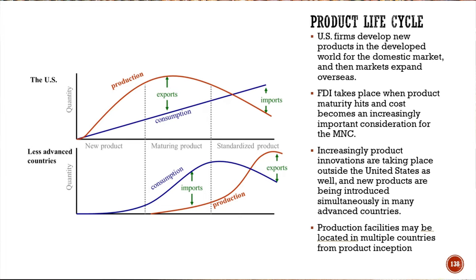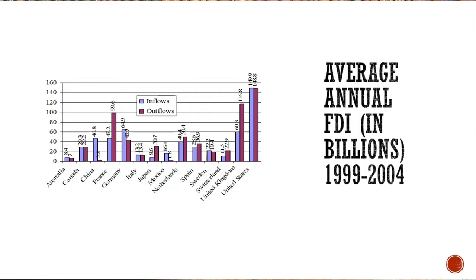As a country increases its skills, it also makes sense to outsource research and development there. Since the likes, wants, and needs in different countries are inherently different, it makes sense to create research centers around the world to capture different cultural ideas. For example, average annual FDI in billions of U.S. dollars between 1999 and 2004 shows Germany and France with large outflows, while China had enormous inflows — illustrating how China went from rags to riches.